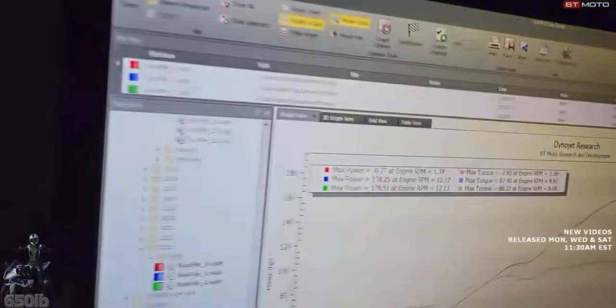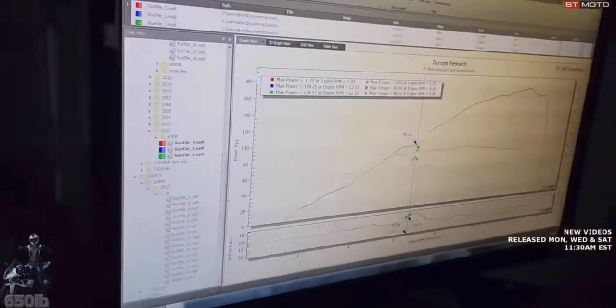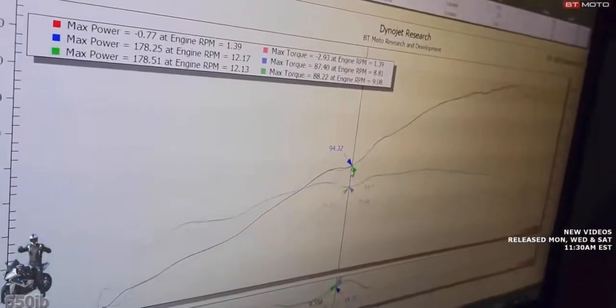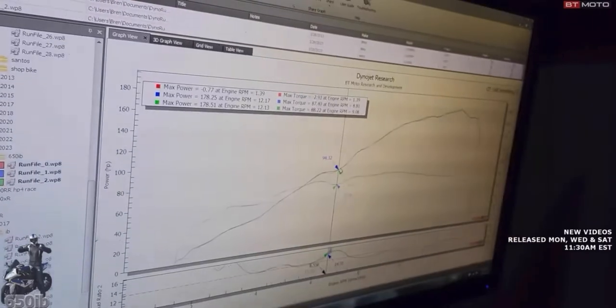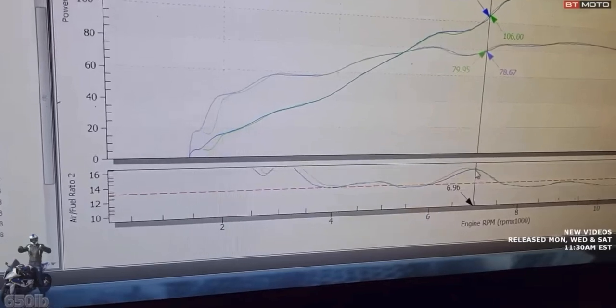So this is a fifth gear run. You can see two things we'll just go over real quick. Big dip right here - there is a throttle closure on this bike even in fifth gear in this area. And as you can see, the bike goes severely lean. If you look down a little bit further, very lean there.